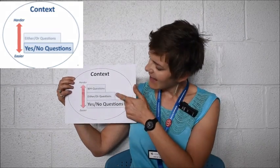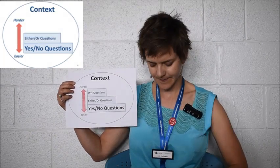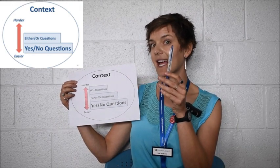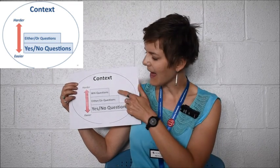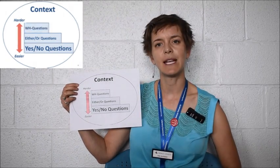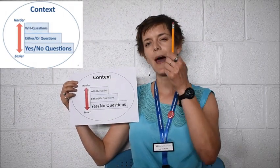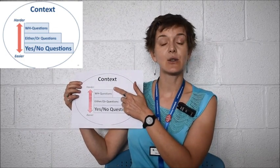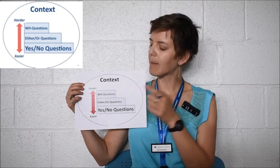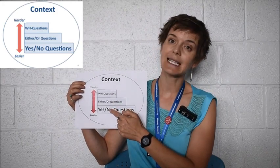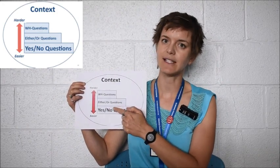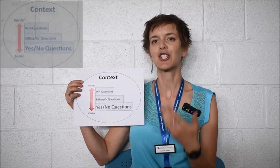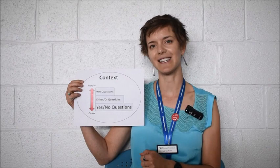If students are good with that, then I can move up to either/or. Is this a pencil or a pen? If they're good with that, then I can move up to WH questions: What is this? So if I get up here and I see that students are struggling, no problem. I can just move back down the hierarchy to an easier level until the students feel confident and can respond and show me how much they know and can do.